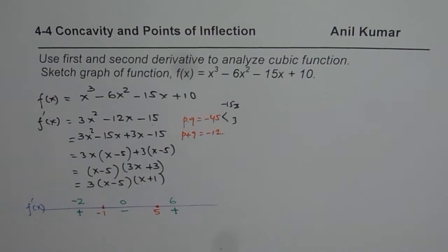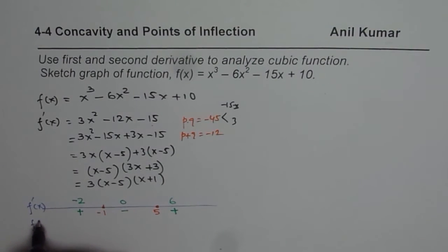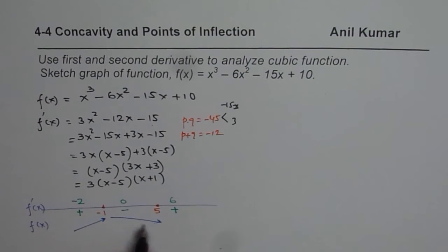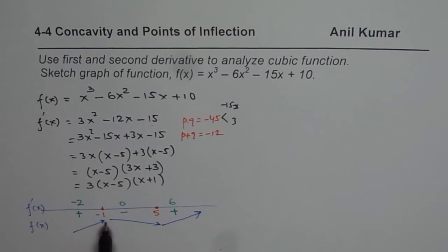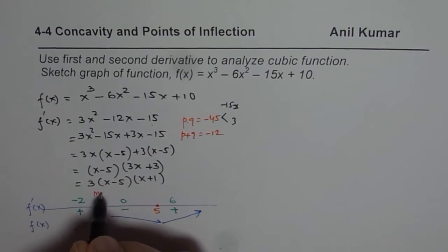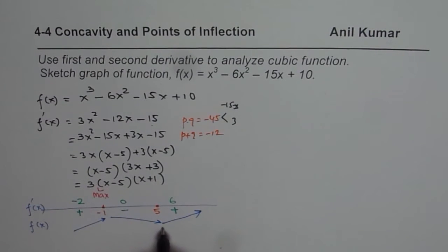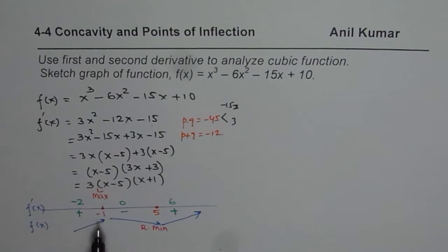A positive rate of change means the graph f(x) will be increasing in that interval, and negative means it is decreasing. So the function increases on (−∞, −1), decreases on (−1, 5), and increases on (5, ∞). That gives us two local extrema: a relative maximum at x = −1 and a relative minimum at x = 5.